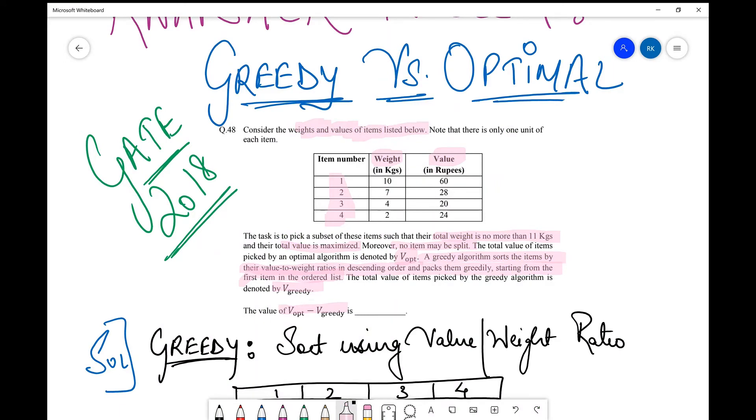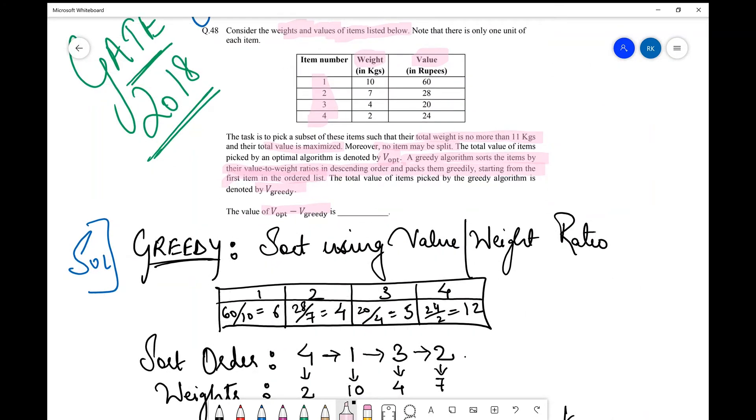So first obviously using the greedy approach I have to sort them using value to weight ratio. So first of all I compute value to weight ratio for all these items 1 to 3 4. So these are the values as you can see simply picked from the table and divided by their weights. I am computing value to weight ratio. Next is I need to sort them using these ratios that I've computed. So I sort them and I have written these as the indexes of the items.